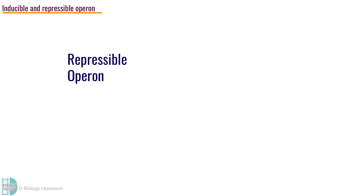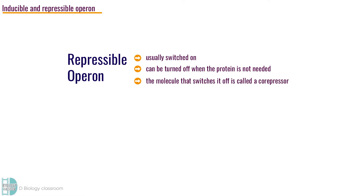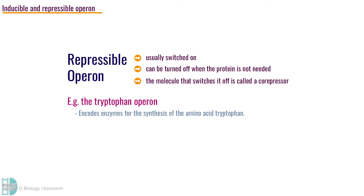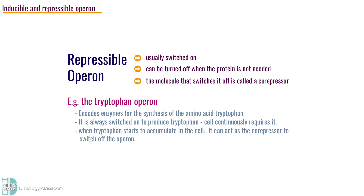Repressible operons are usually switched on. They can be turned off when the protein is not needed. The molecule that switches it off is called a corepressor. For example, the tryptophan operon is a repressible operon. It encodes enzymes for the synthesis of the amino acid tryptophan. It is always switched on to produce tryptophan as the cell continuously requires it. However, when tryptophan starts to accumulate in the cell, it can act as the corepressor to switch off the operon.